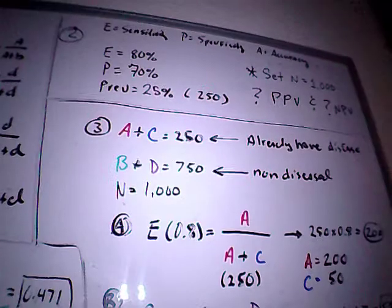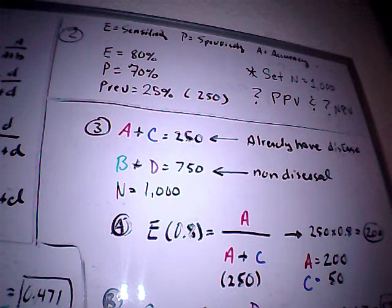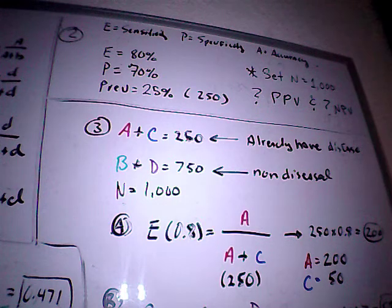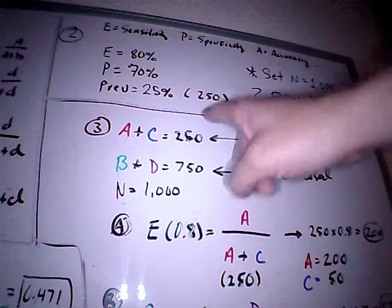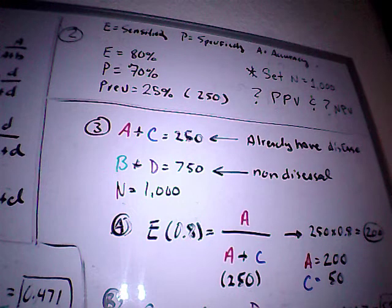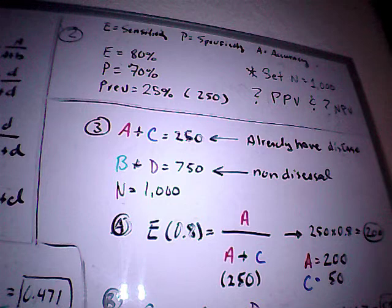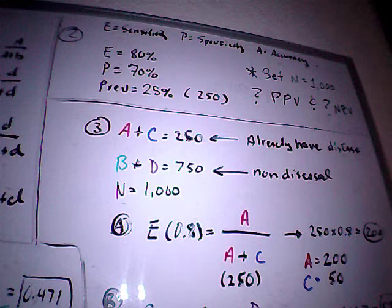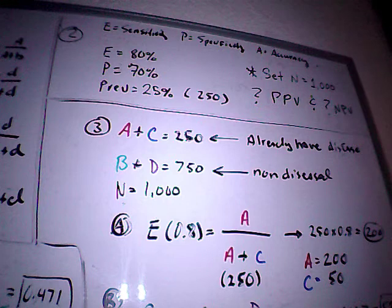So step 2, just to remind you what we're dealing with, we have an E, which is a sensitivity of 80 percent, a P, specificity of 70 percent, a prevalence of 25 percent. And we're going to set our total number of people that we're looking at to 1,000. So that means that 250 people out of that 1,000 people have the disease that we're testing for. That's a 25% prevalence, right? So that's 250 people out of 1,000.